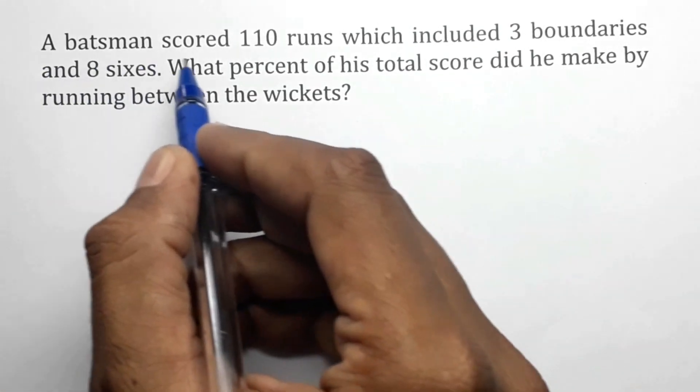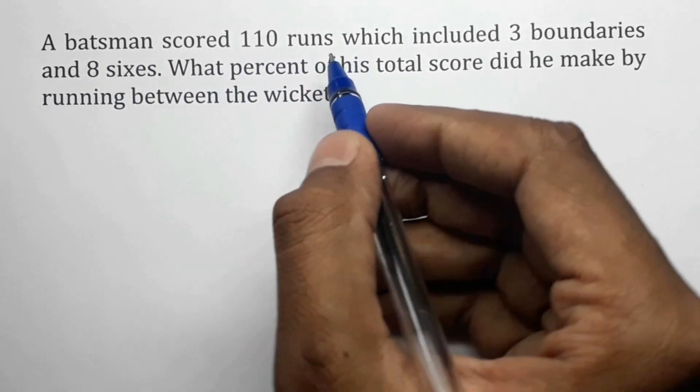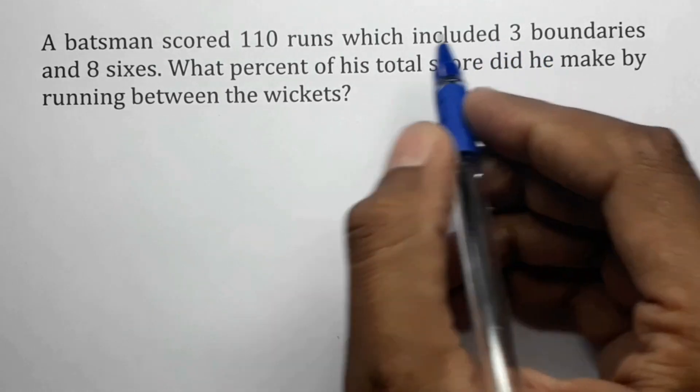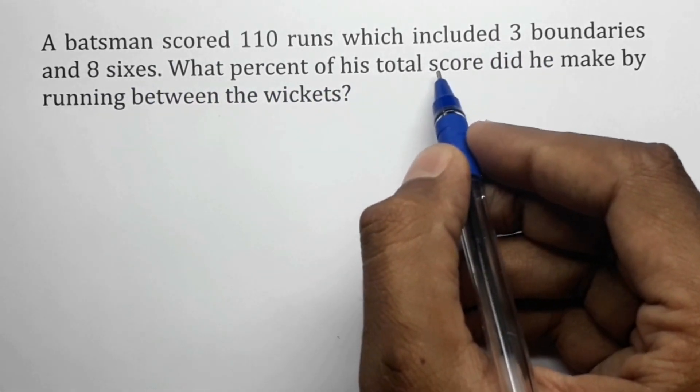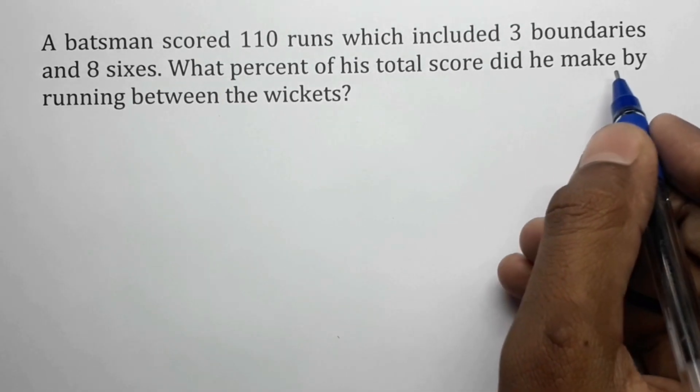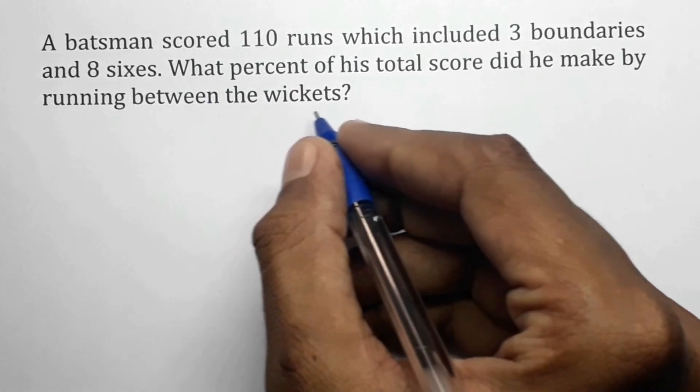A batsman scored 110 runs which included 3 boundaries and 8 sixes. What percentage of his total score did he make by running between the wickets?